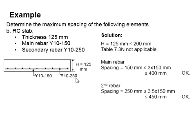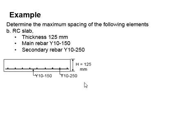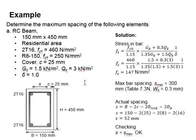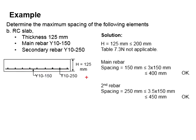Let's look at the solution. The thickness of 125 mm is less than 200 mm, so Table 7.3N is not applicable. You must refer to another table for checking.